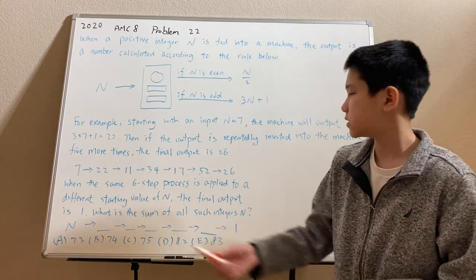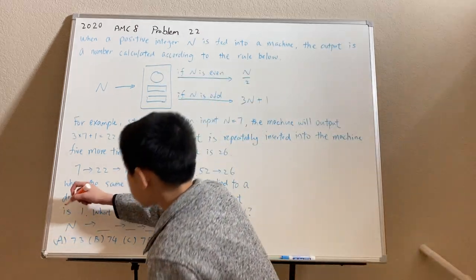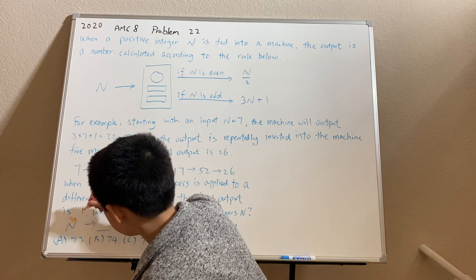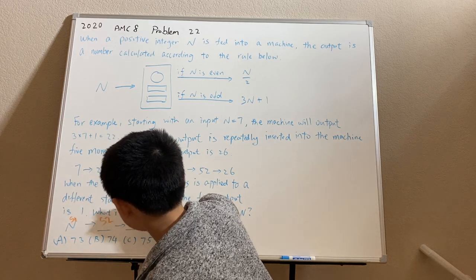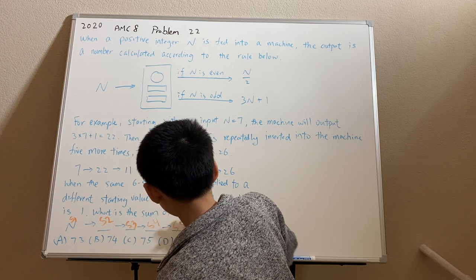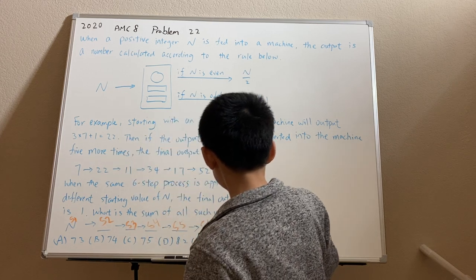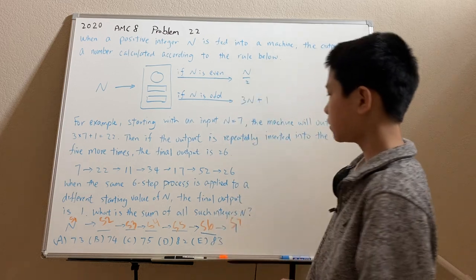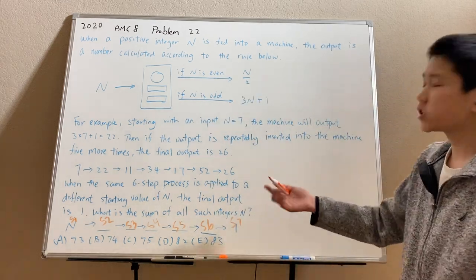Let's label the stages of this sequence. So this is going to be stage 1, stage 2 is going to be this, stage 3, stage 4, stage 5, stage 6, and that's going to be stage 7.